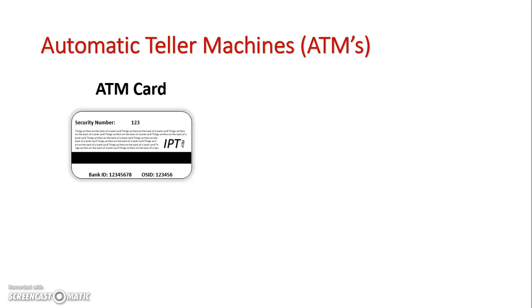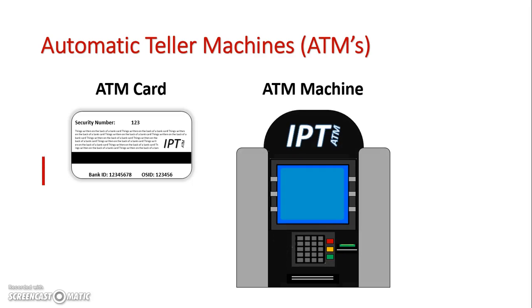If we take a look at the components involved in using automatic teller machines, the first one is the actual ATM card. On the back of the ATM card there's a whole variety of data that is useful to the owner of the card, including what types of ATM machines might not offer a fee when you use them. What we're mainly focused on when using an automatic teller machine is the magnetic strip, which is what specifically gets read by the ATM machine — entered into the card reader where there's an actual strip reader that can read the magnetic strip.